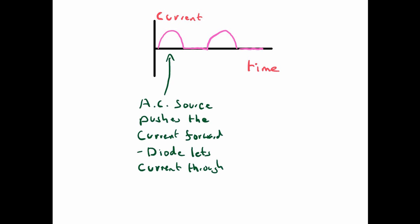So an AC source, it pushes the current forward and the diode lets the current through, but as soon as the AC source tries to pull the current backwards through the diode, the diode stops the flow.